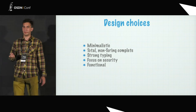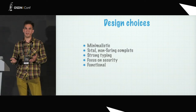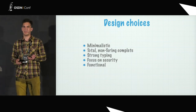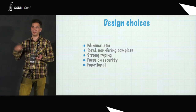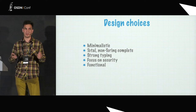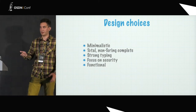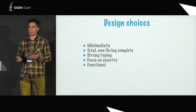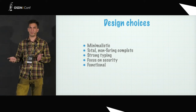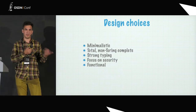Design choices for the language: first of all, Dhall is very minimalistic — it was designed to be learned in a day or a few days, and can be mastered in a few weeks. It's a total language; it is not Turing complete. There are no goto statements, no loops, no function recursion, and no recursive data types — by design. Every Dhall expression is guaranteed to terminate in some finite amount of time. It has strong typing, so you cannot implicitly convert from one type to another. It has a strong focus on security, and it's a functional language — all functions are pure, all data is immutable, and you can pass functions as arguments to another function.